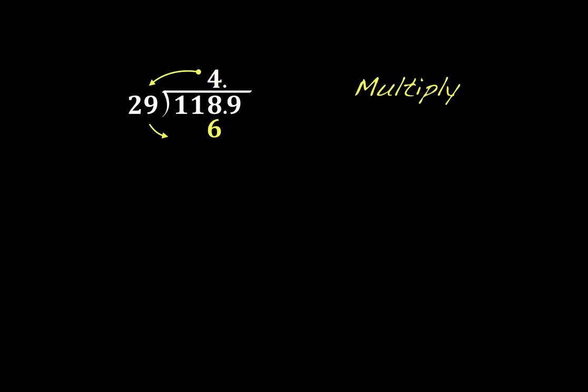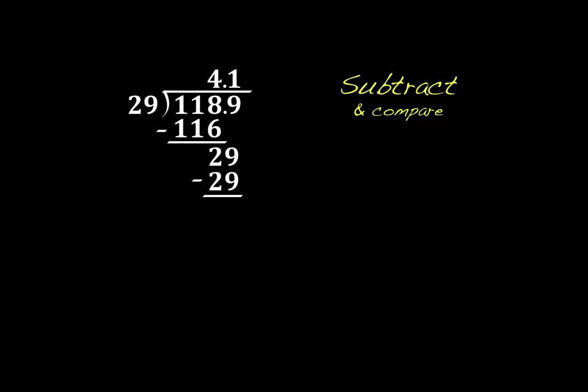Four times nine gives us 36. Put my six, carry the three. Four times two is eight, plus three is going to give me 11. Go ahead and subtract. Compare. 2 is less than 29, so I'm good. Bring down that nine. And we're going to go ahead and divide 29 into 29. Goes one time. Multiply down. 29. Subtract. And zero. Here we go.